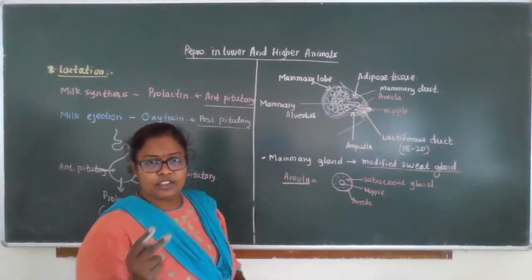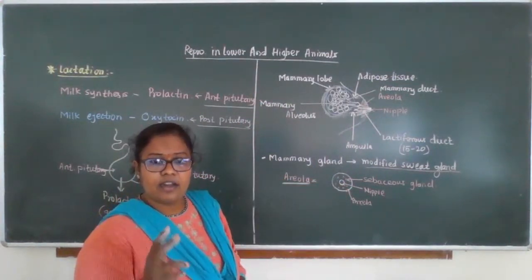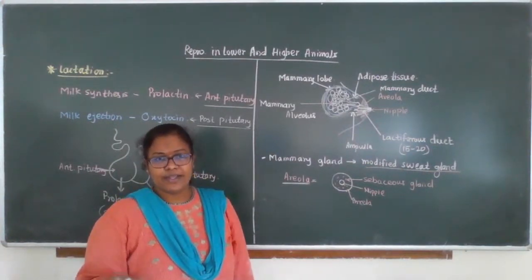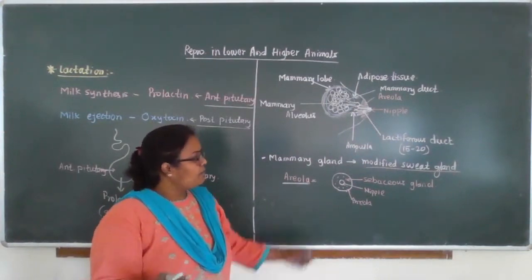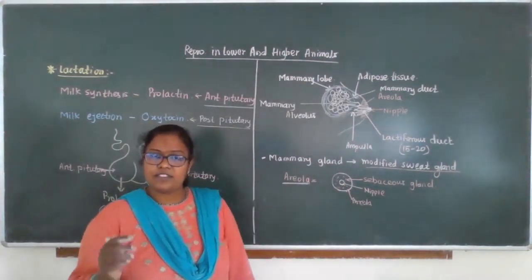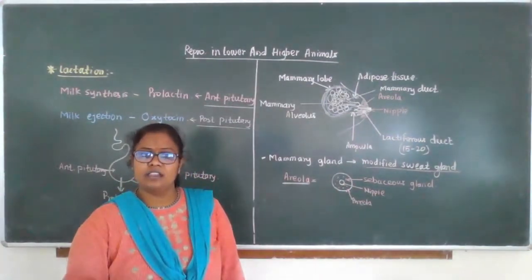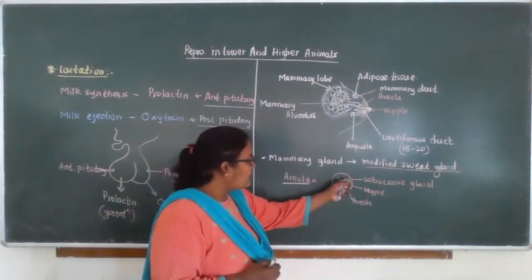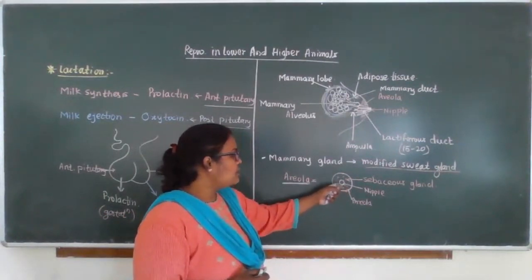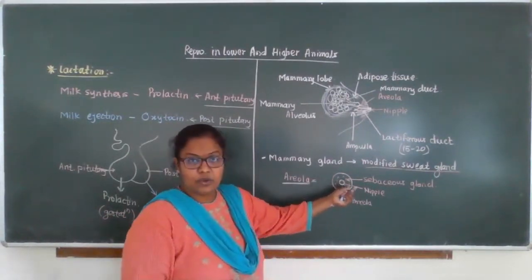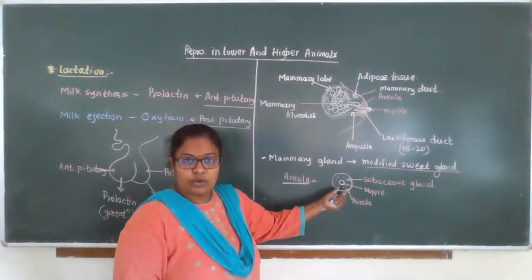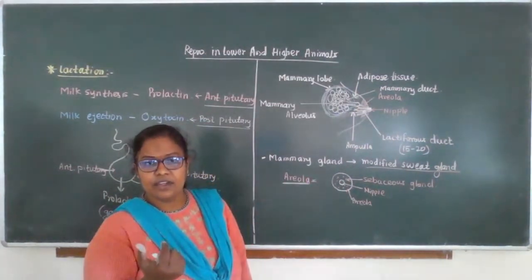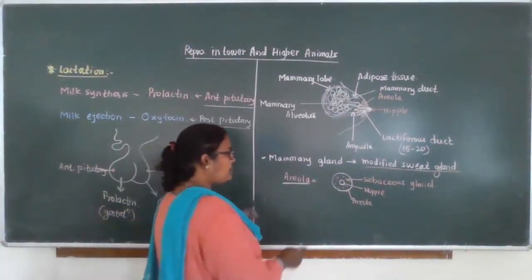In the skin there are two major glands: the sweat gland and the sebaceous gland. The sweat gland secretes sweat. The sebaceous gland secretes sebum, which is an oily secretion. This oily secretion does not allow the areola to become dry, so there is no cracking and it gets protected.